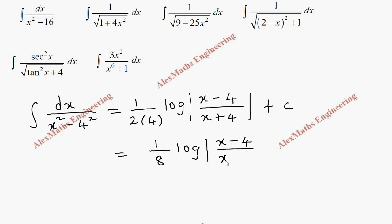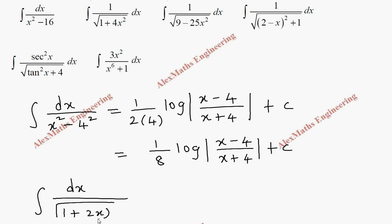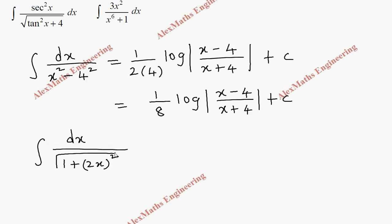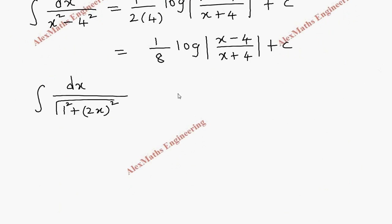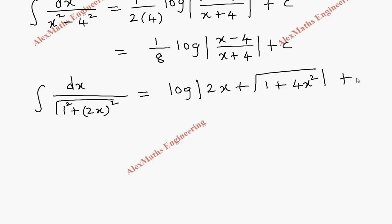Question 2: ∫dx/√(1+4x²). This can be written as √(1²+(2x)²), so instead of x we have 2x, and instead of a we have 1. This is of the form ∫dx/√(x²+a²), which is Formula 6: log|x + √(x²+a²)| + C. The answer is log|2x + √(1+4x²)| + C, but since the coefficient of x is 2, we divide the outside by 2, giving (1/2) log|2x + √(1+4x²)| + C.